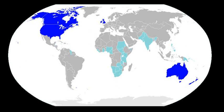Braj Kachru distinguishes countries where English is spoken with a three-circles model. In his model, the 'inner circle' countries are countries with large communities of native speakers of English. 'Outer circle' countries have small communities of native speakers but widespread use of English as a second language in education, broadcasting, or for local official purposes. 'Expanding circle' countries are countries where many learners learn English as a foreign language. Kachru bases his model on the history of how English spread, how users acquire English, and the range of uses English has in each country.